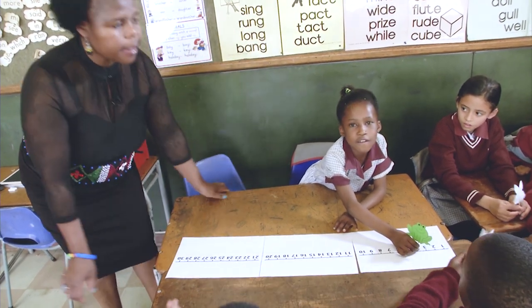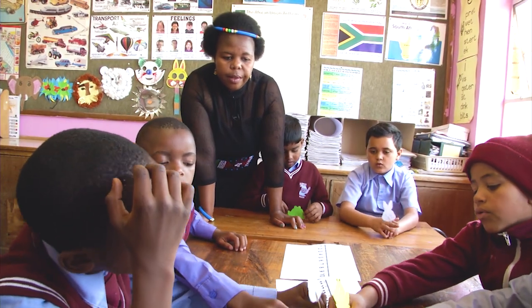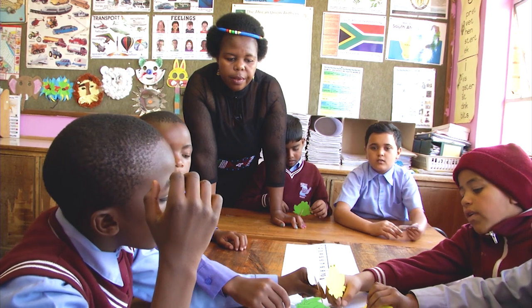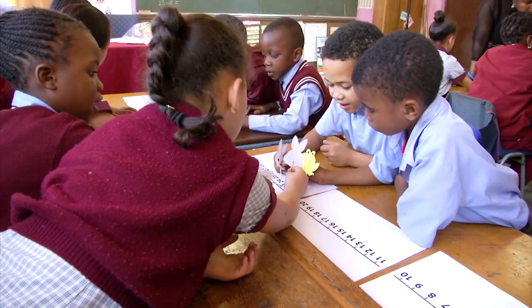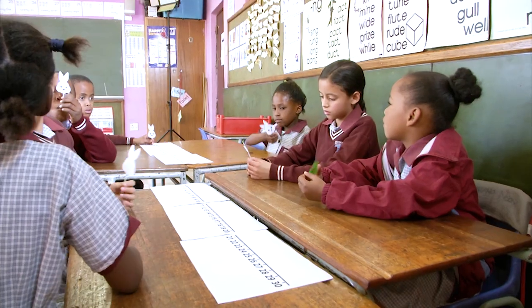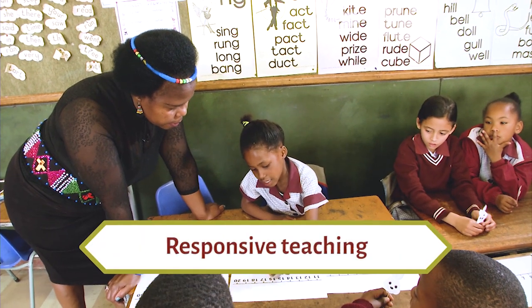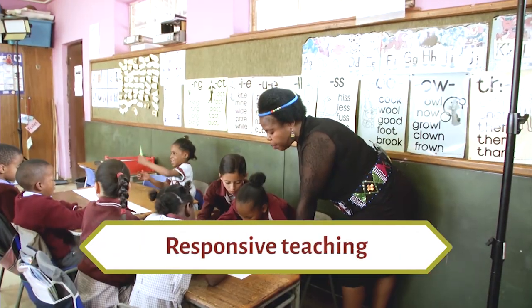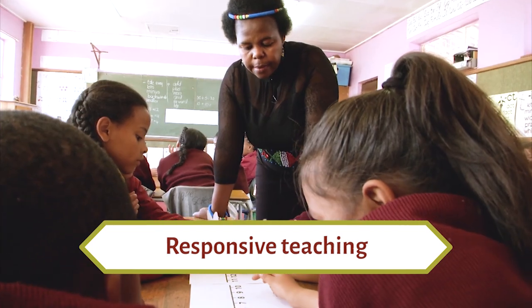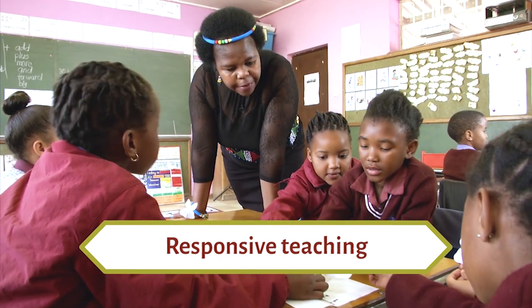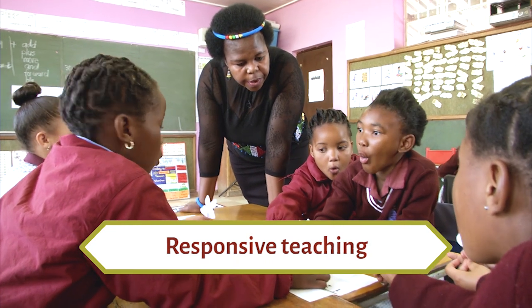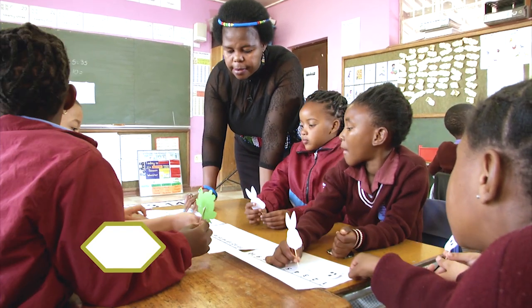The group work helps the learners and also motivates those who are weaker. The stronger learners help the weaker ones so they understand better. Using the bunny is so fun for the children — I saw them enjoying it. Learning with enjoyment makes the lesson much more effective. I walked around to check how learners were working, supporting the weaker learners. Nine minus five equals four — correct.